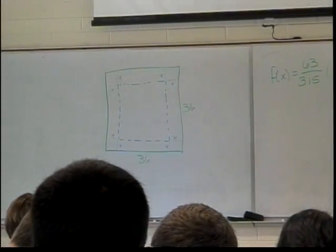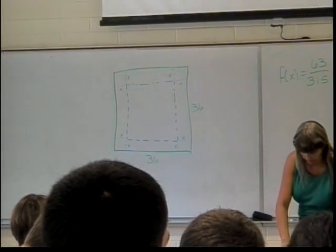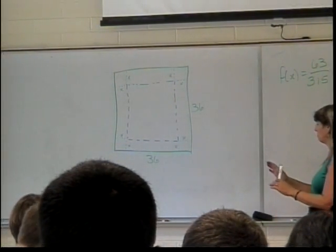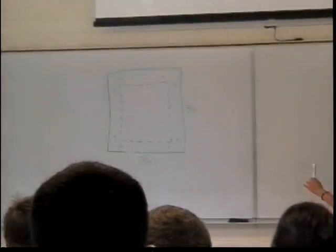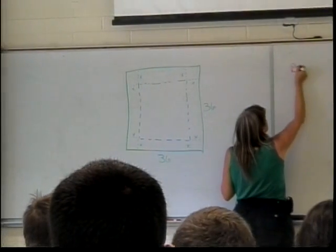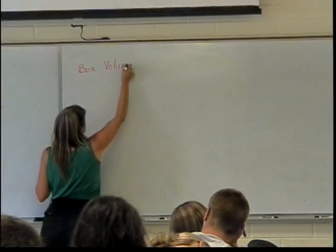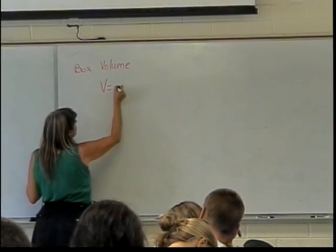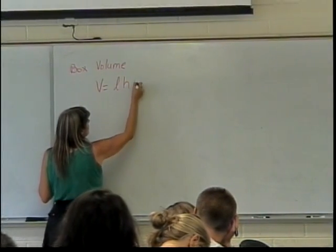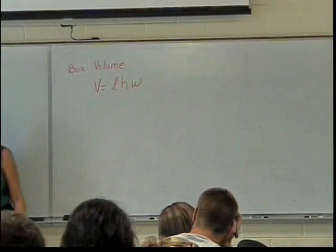Determine the volume of the box as a function of the variable x. Well, let's start with something that's pretty easy for everybody. Standard box. What's the formula for the volume? Length times width times height. So V equals L times H times W. Okay, I didn't put them in order, but it's all there.